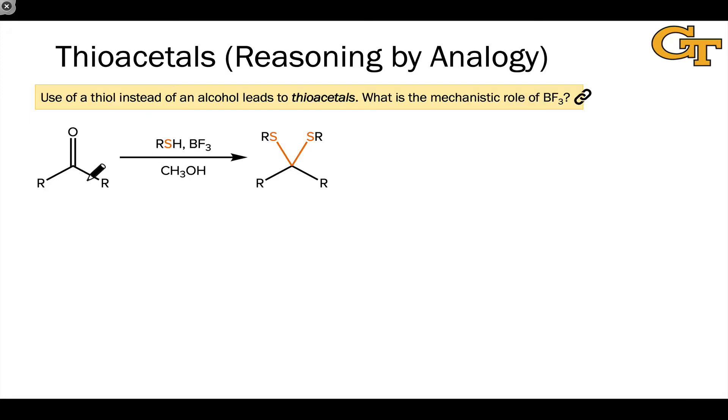The reactivity of thiols with carbonyl compounds have some analogies to acetal formation. So we can reason by analogy to readily understand how we can form what are called thioacetals for fairly obvious reasons. This is an acetal with sulfur replacing the oxygens from carbonyl compounds and thiols. This reaction uses alcoholic solvent typically, which is interesting, because this would lead to the formation of an acetal in the presence of a Bronsted acid catalyst.